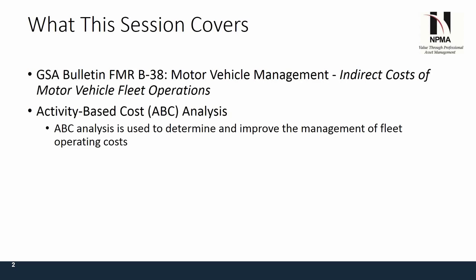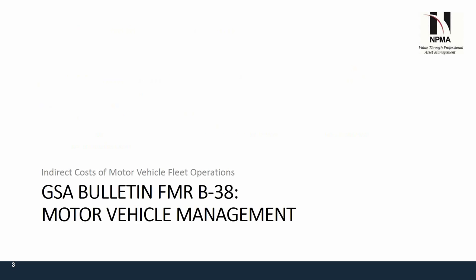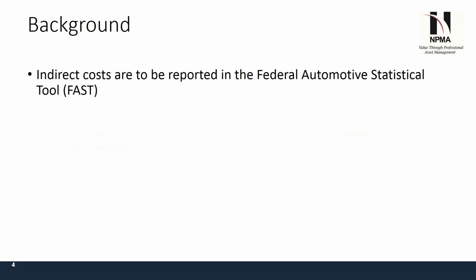ABC is a little bit more thorough in that it determines ways to improve your fleet management and the operating costs. The background for this is indirect costs. They have to be reported in the Federal Audit Most Successful Tool — FAST — and I know many of you just finished up around December 17th getting all your data in so that GSA can start reviewing it. It's very laborious and time-consuming, but it's a very important process.